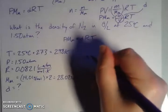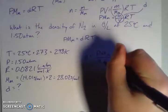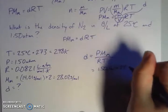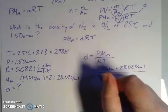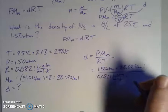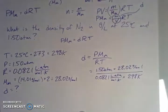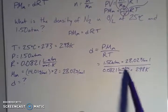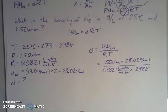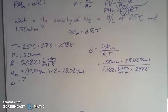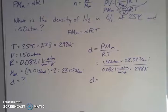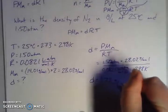Rearranging Pimdert and solving for D: D equals P times molar mass divided by RT. Plugging in: 1.50 atm times 28.02 g/mol, divided by 0.0821 L·atm/mol·K times 298 K. Atmospheres divide out, Kelvin divides out, moles divide out — leaving grams per liter. The answer, to three sig figs, is 1.72 grams per liter.